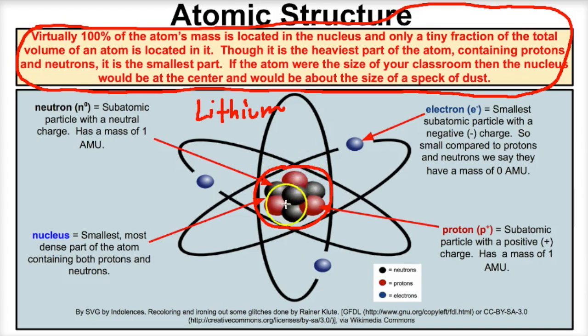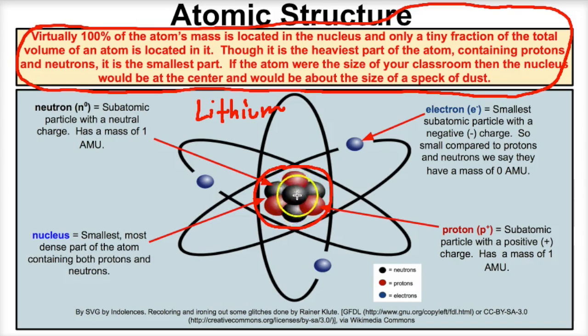If we take a look at this nucleus, we can see that there are two subatomic particles packed tightly within it. We've got protons and we've got neutrons.